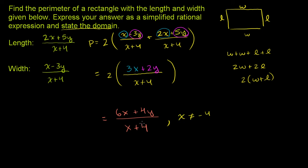So we can constrain the domain and say x cannot equal negative 4. This is undefined at x equals negative 4. The simplified rational expression for the perimeter is (6x + 4y)/(x + 4), where x cannot be negative 4.